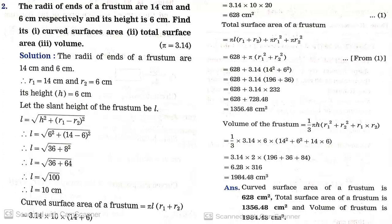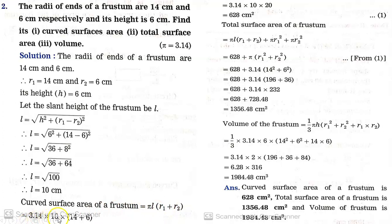Finding slant height: L = √(H² + (R1 − R2)²) = √(6² + (14 − 6)²) = √(36 + 64) = √100 = 10 cm. Now, curved surface area of the frustum = πL(R1 + R2) = 3.14 × 10 × (14 + 6) = 3.14 × 10 × 20 = 628 cm².